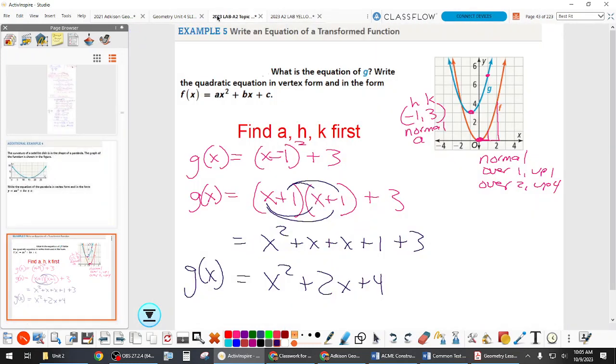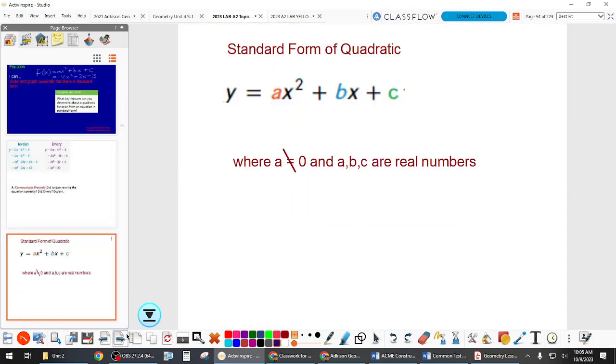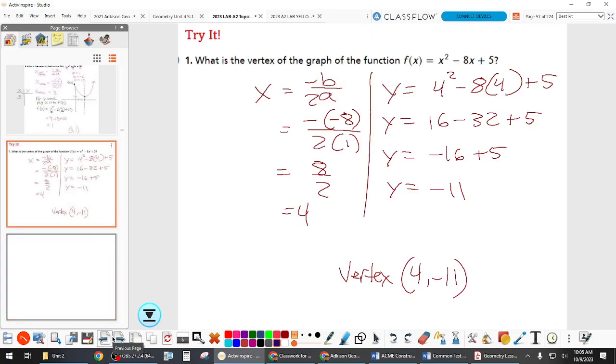So we find what B and A are, and we divide negative B or opposite of B by 2A, and that gives us some value. And then we plug that back into the function, and so the Y coordinate is F of whatever that value is. In this case B was negative 8, and we found that the opposite of it was 8. We divided it by 2 times A, which was 1, and we got 4.